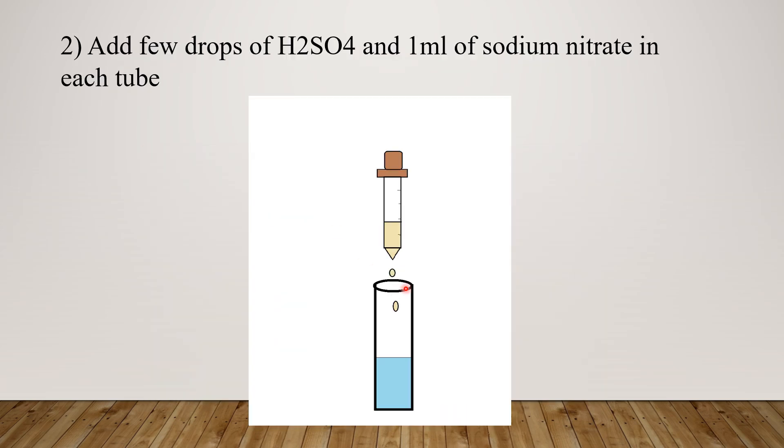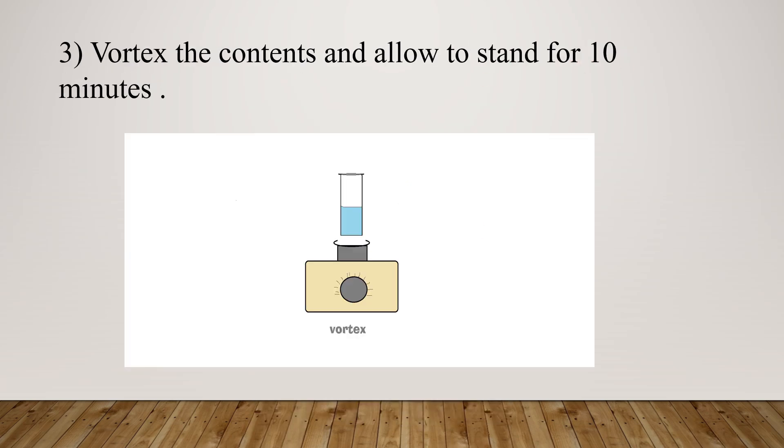To each test tube, add a few drops of sulfanilic acid and 1 ml of sodium nitrite. Now vortex the test tubes and allow them to stand for 10 minutes.